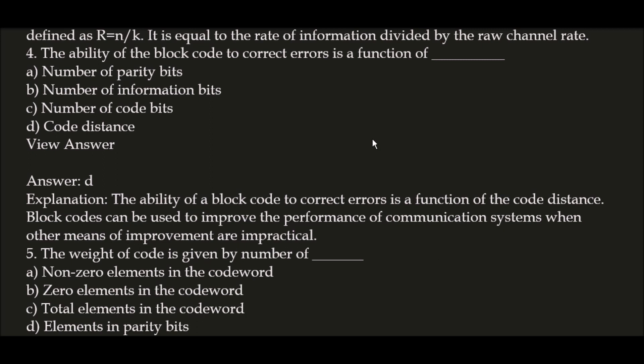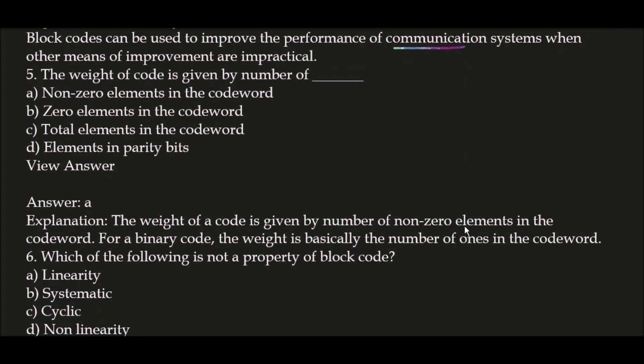Next question: the ability of the block code to correct errors is a function of? The correct answer is option D — code distance. The ability of a block code to correct errors is a function of the code distance. Block codes can be used to improve the performance of communication systems when other means of improvement are impractical.